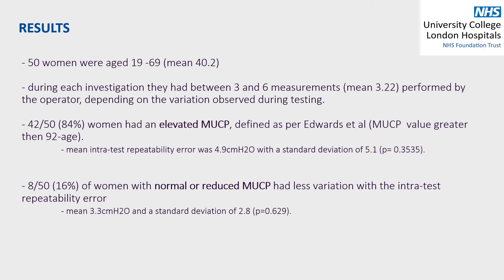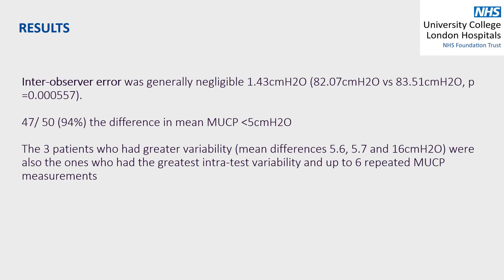The mean intra-test repeatability error in this group was 4.9 cm of water with a standard deviation of 5.1 cm of water. In contrast, eight women with normal or reduced MUCP had less variation in the intra-test repeatability error of mean 3.2 cm of water and a standard deviation of 2.8 cm of water. Inter-observer error was generally negligible at 1.43 cm of water, and in 94% of the traces, the difference in mean MUCP was less than 5 cm of water.